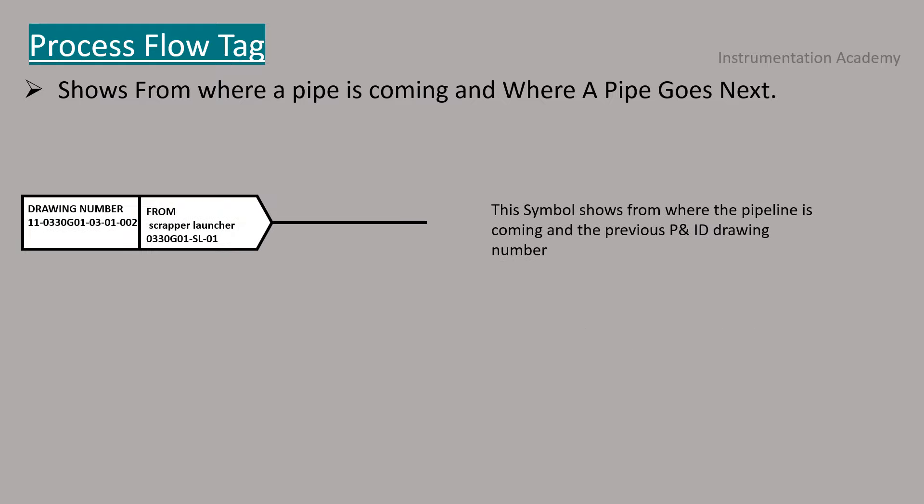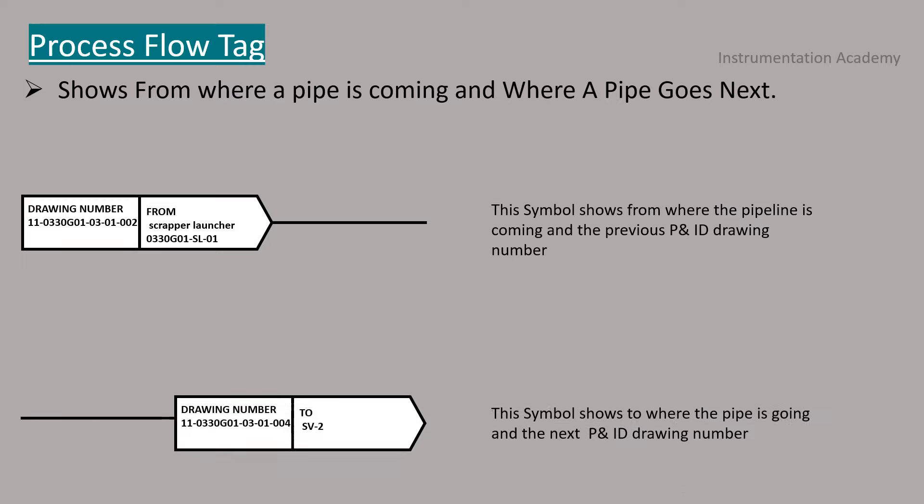Many drawings are needed to represent an entire plant. So a method for showing where a pipe goes next appears in every drawing. That is the process flow tag. This symbol shows from where the pipeline is coming and the previous P&ID drawing number. This symbol shows to where the pipe is going and the next P&ID drawing number.